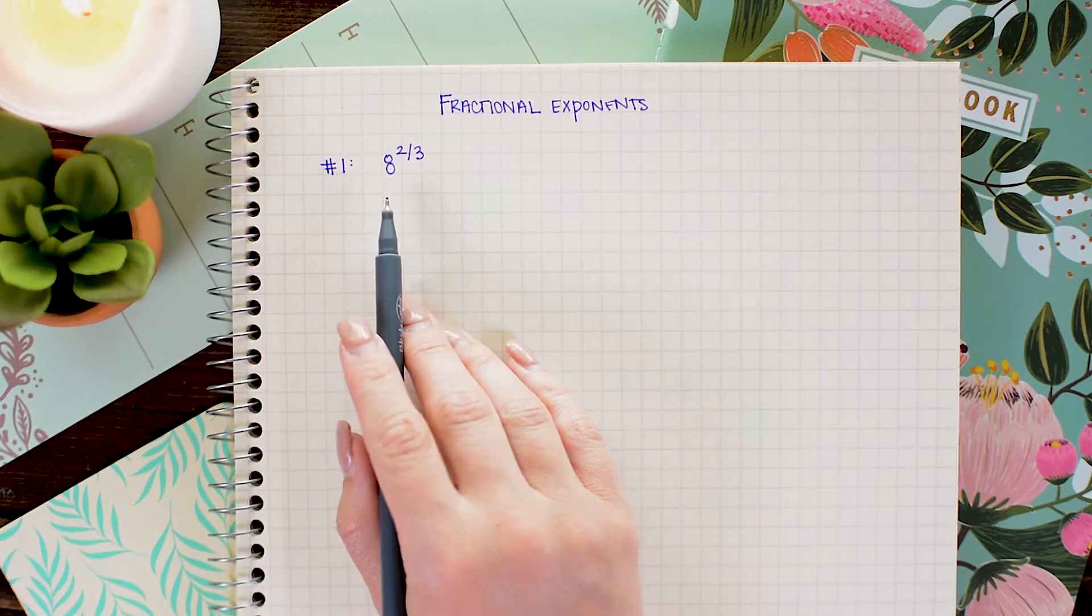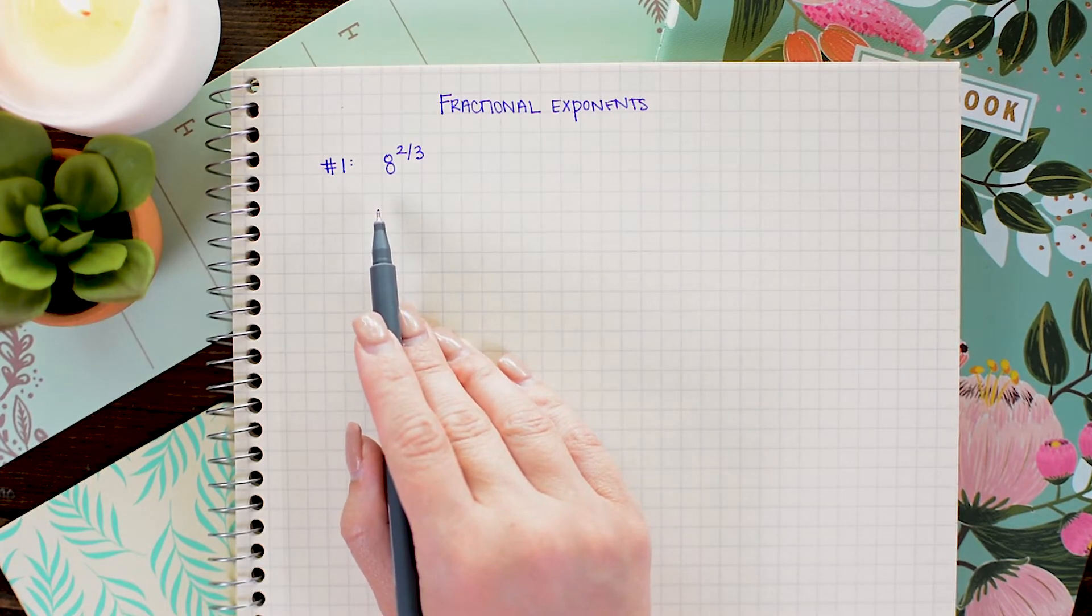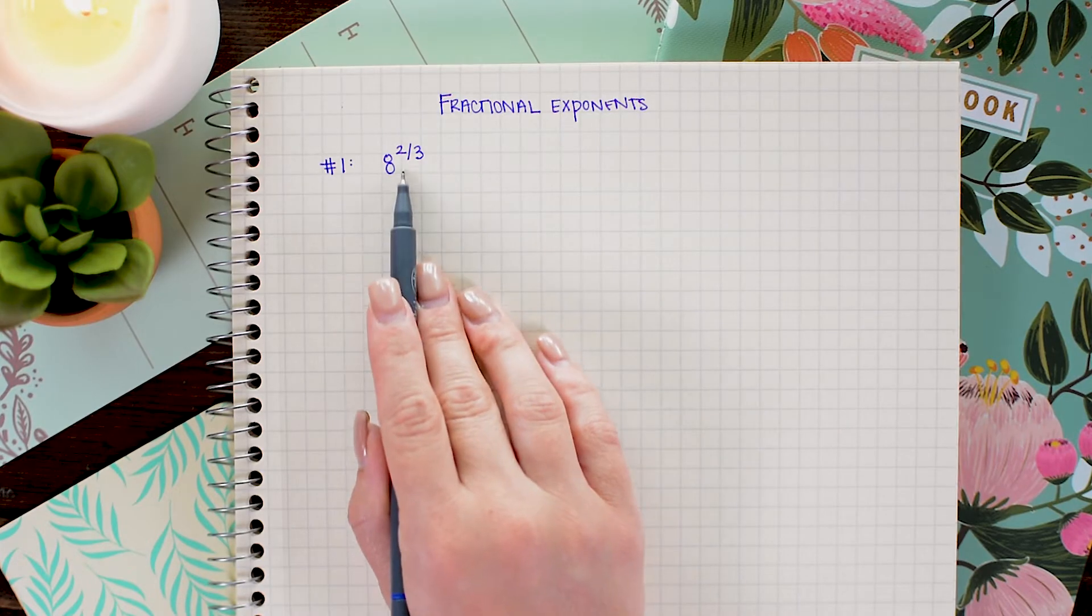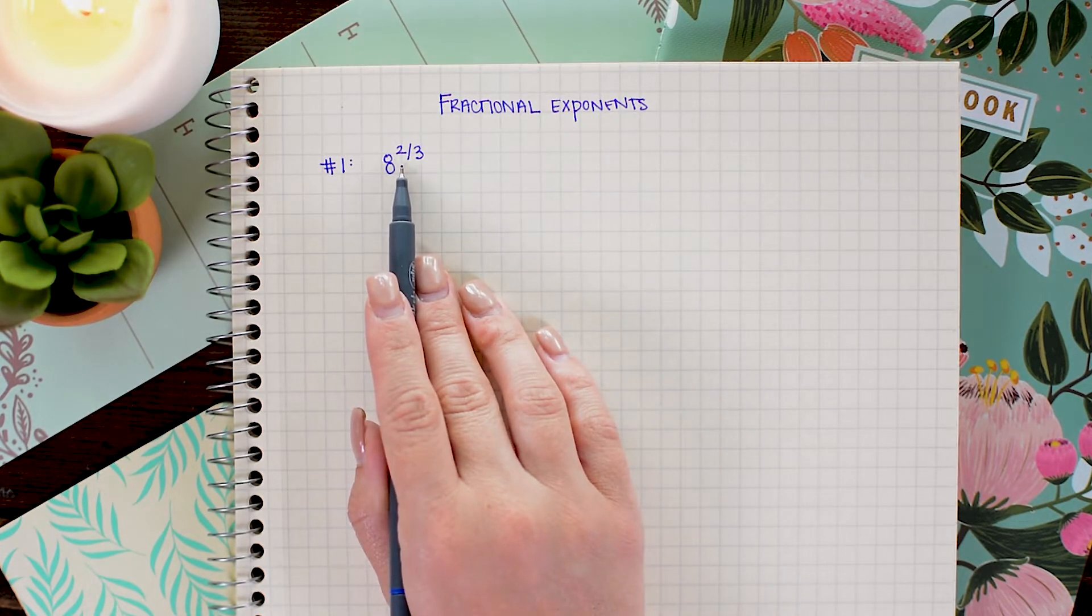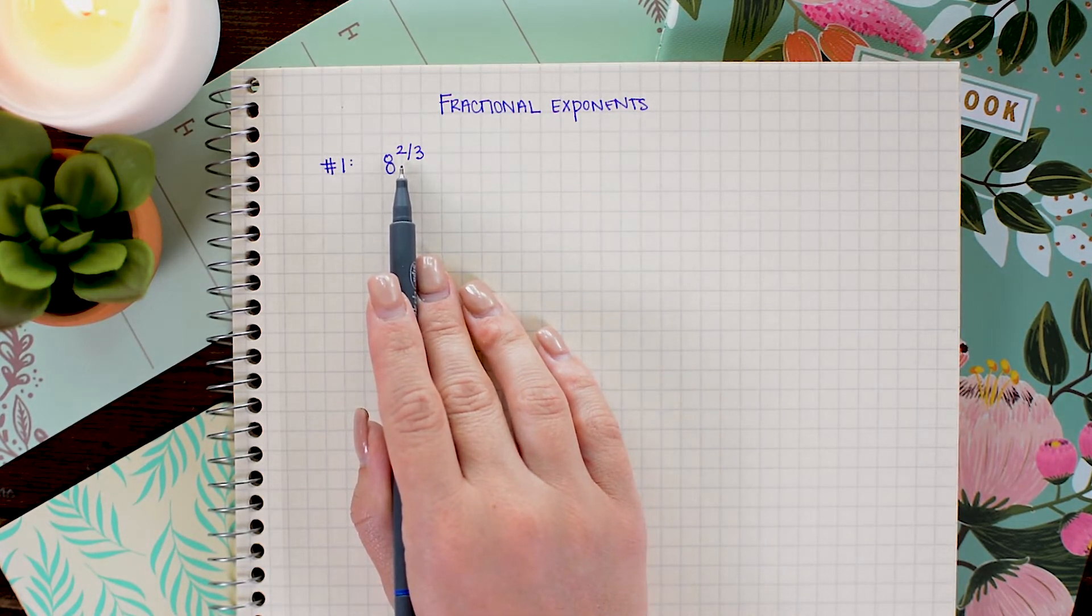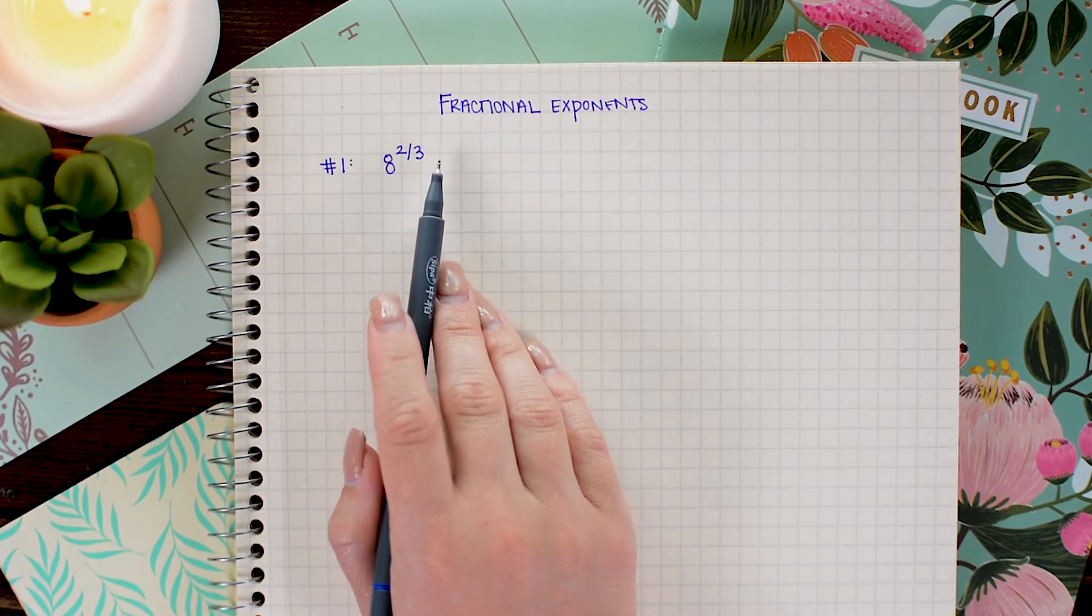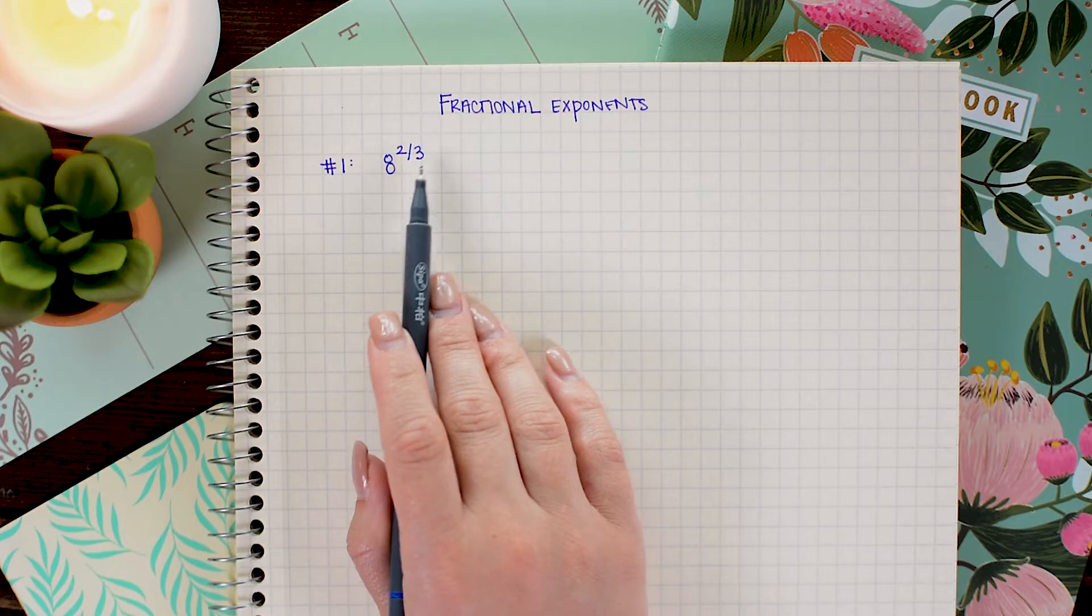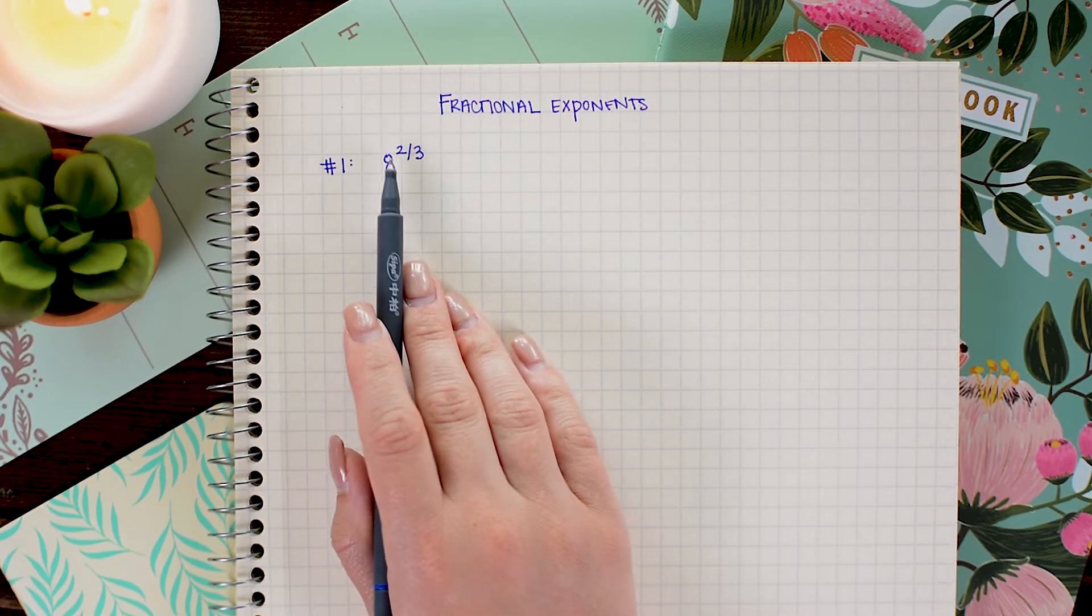When working with fractional exponents, we have a tiny bit new notation to learn. Now we still have our base number, in this example which is 8. We still have a power. Now technically the power is the entire two-thirds. But within that two-thirds, we kind of have two new parts.